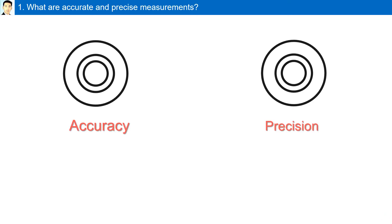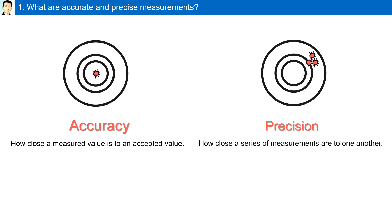What are accurate and precise measurements? Accuracy is how close a measured value is to an accepted value, while precision is how close a series of measurements are to one another.